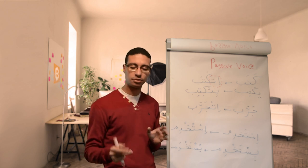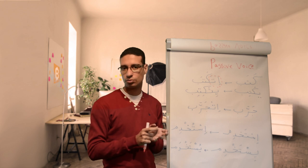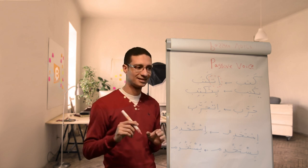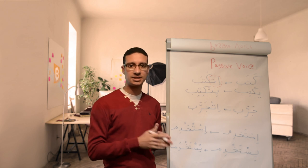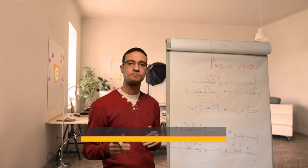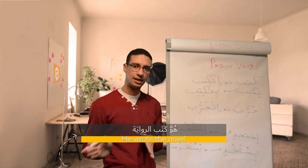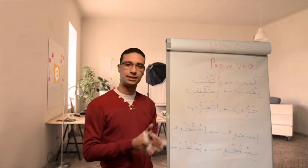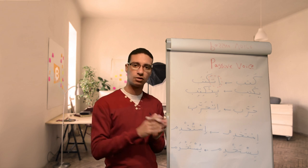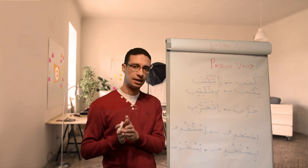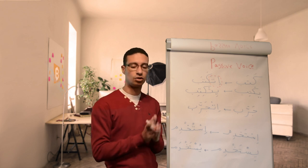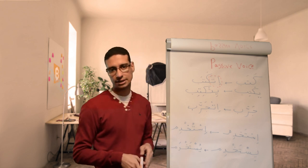Another example with a feminine object, huwa al-riwaya. Huwa al-riwaya, this is novel, he wrote the novel. The passive is al-riwaya, the novel it-katabat, was written.